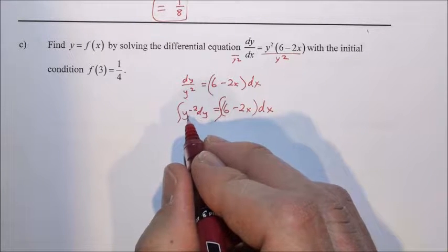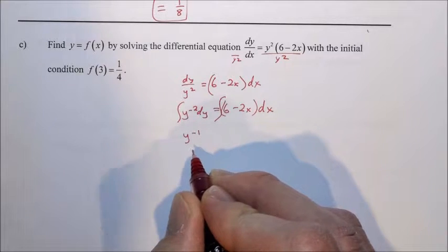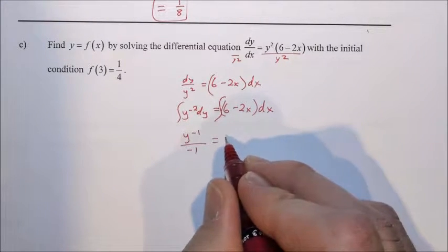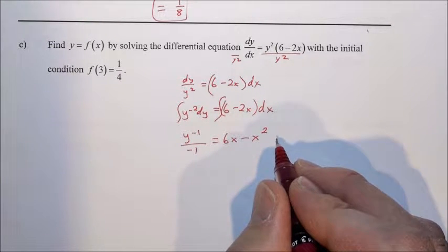We cannot make this the natural log of y squared. We're only allowed to use natural log if the exponent is 1, this exponent is 2. So we must use the reverse power rule. We must add 1 and divide by that number. So the anti-derivative, now that we're on to step 2, y to the negative 1 over negative 1. Over here, 6 turns into 6x, 2x turns into x squared. Step 2 is done.